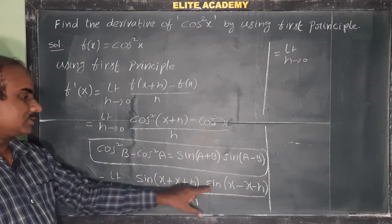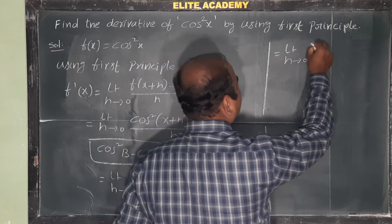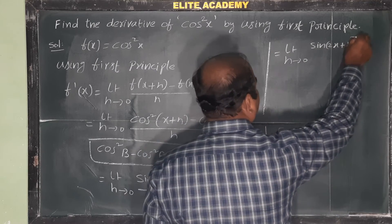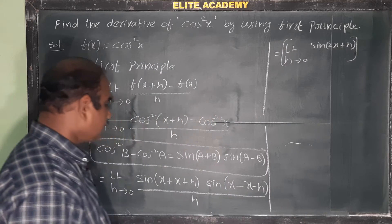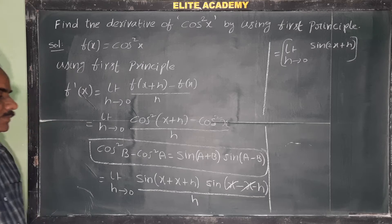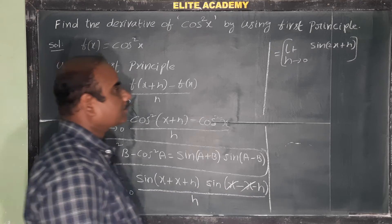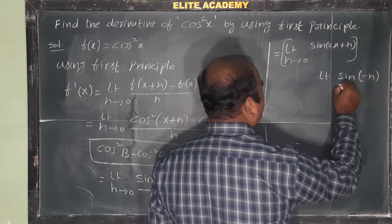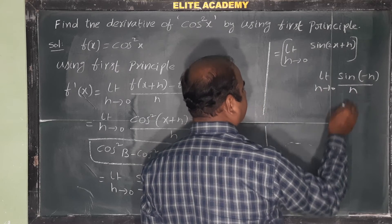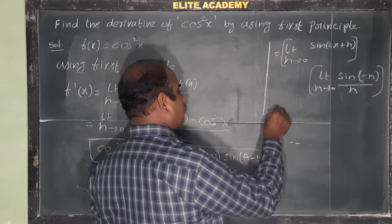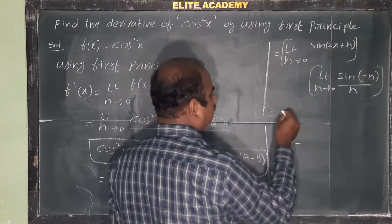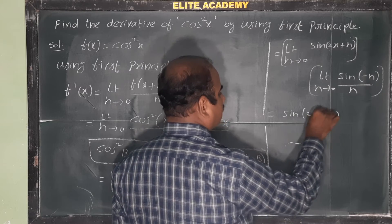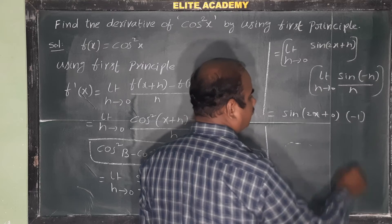So comparing, a is x and b is x+h. After applying the formula: limit h tends to 0 of sin(x + x+h)·sin(x - (x+h)) / h. This simplifies to sin(2x+h)·sin(-h) / h.